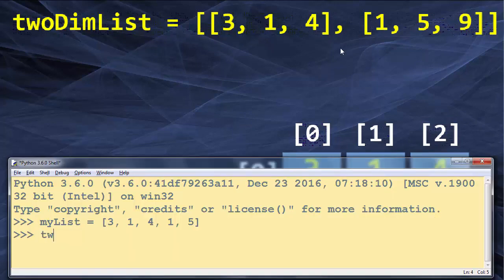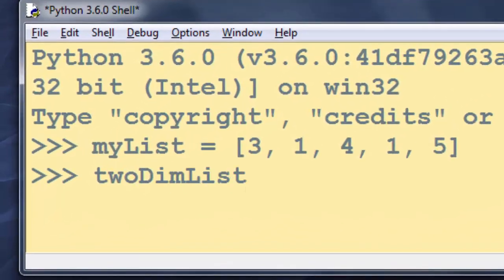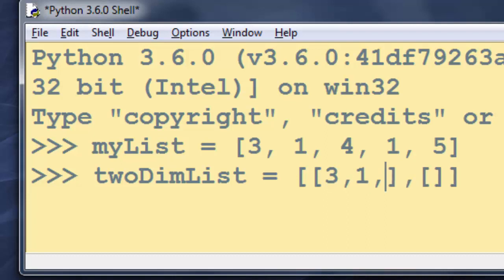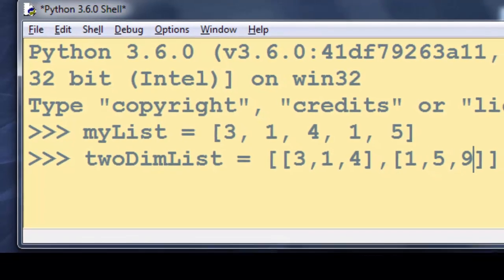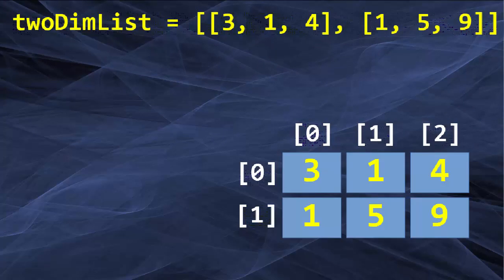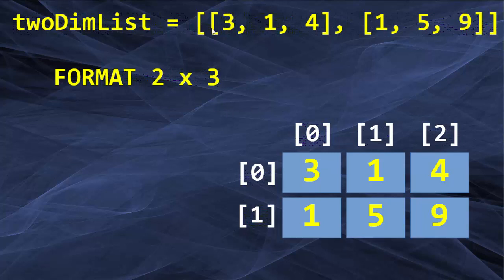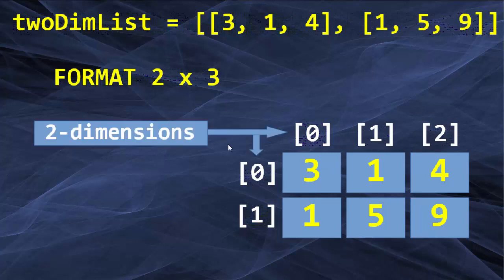I'm going to type that in my Python IDLE. A two-dimensional list has a list and within this list we have two lists with three elements. The first list has elements 3, 1, 4 and the second list has elements 1, 5, 9. We can say for this two-dimensional list that it has format 2 times 3, meaning that within this list we have two lists with three elements in each list. And this two-dimensional list has two dimensions.